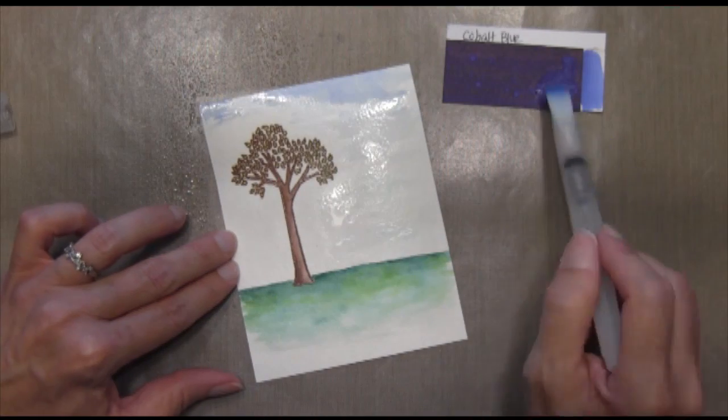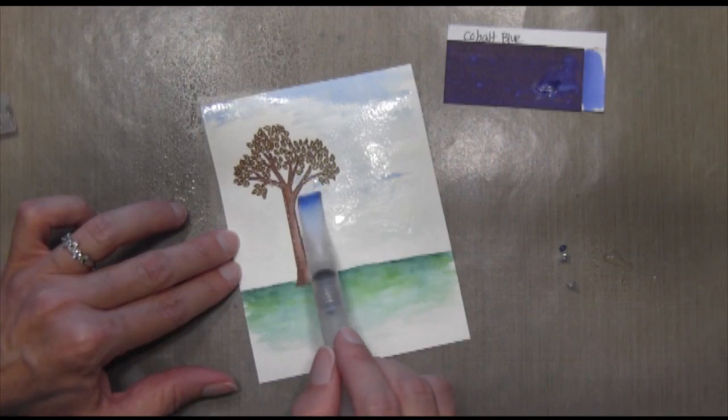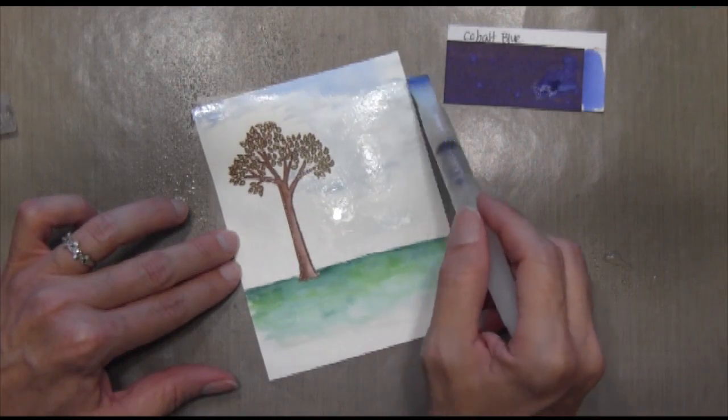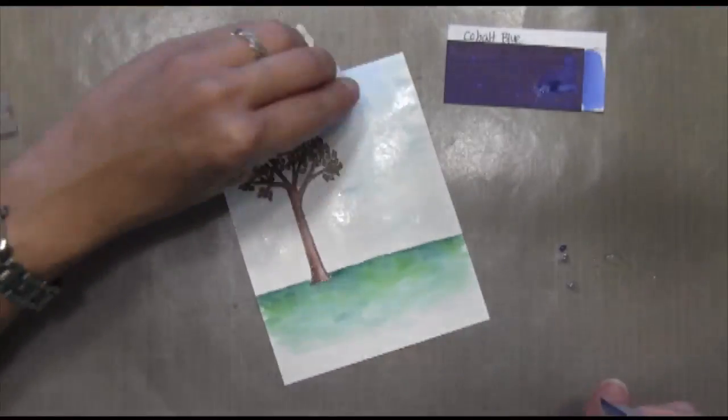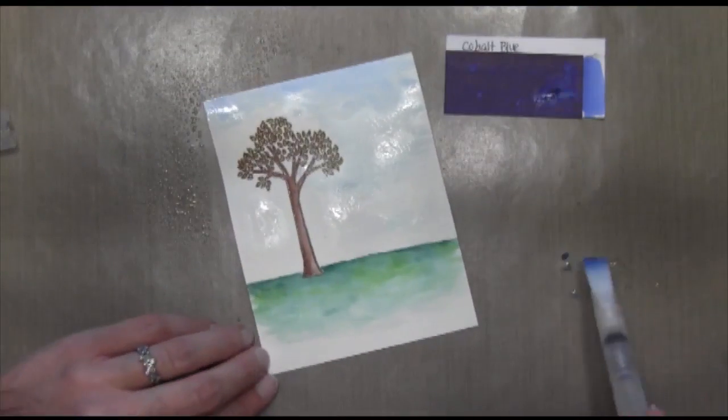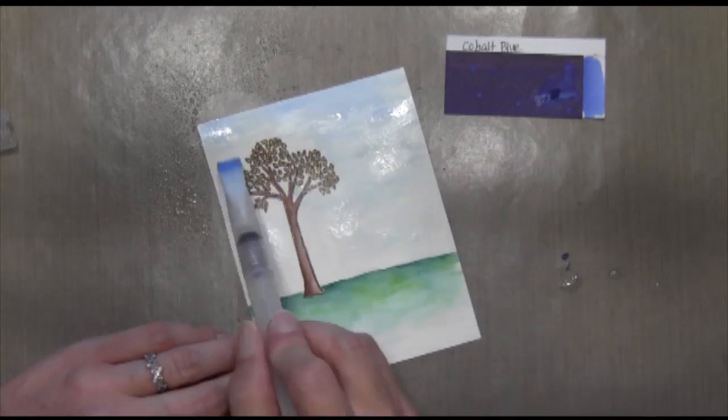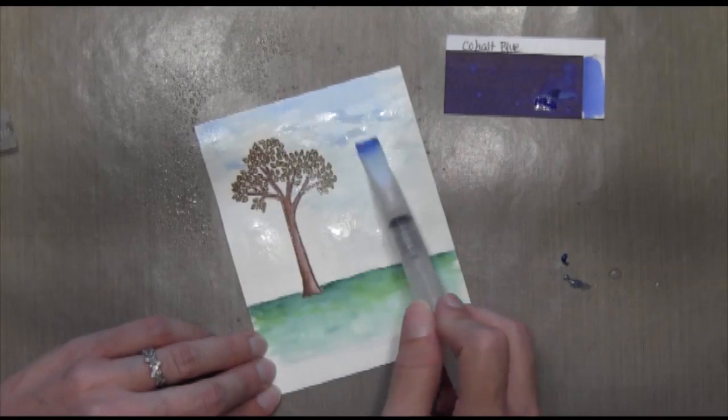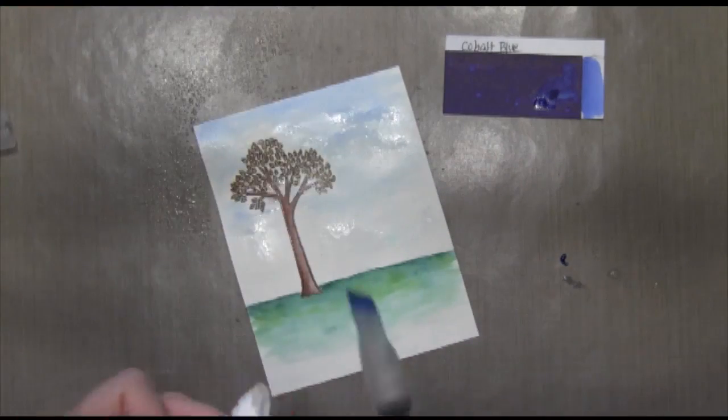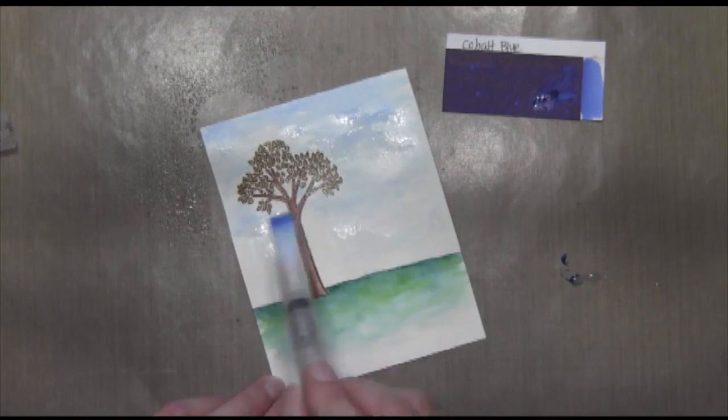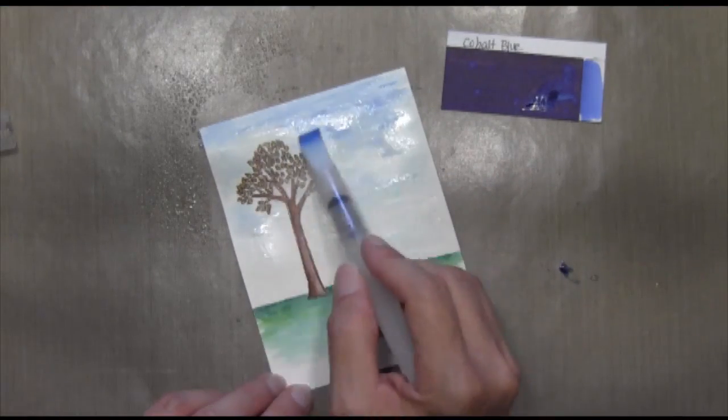The nice thing about these watercolors also is that after they dry, so I let that tree dry with the leaves, the watercolor is pretty well set into the paper. So I can put more water on top of it. I can put other colors on top of it and it won't really affect the color that's already been laid down and absorbed into the paper. Now I'm not going to say that it's perfect and that it doesn't bleed at all. It does bleed just a tiny bit but I'm pretty careful with it and I don't think you can really notice it.